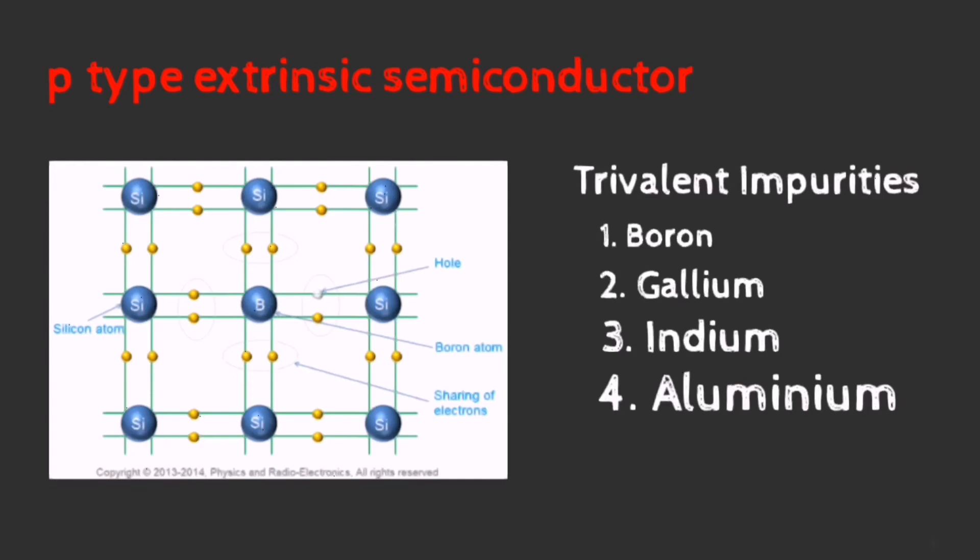When some external heat is provided, the bounded electron gains sufficient energy and tries to fill the vacant position. In this way, the movement of electrons generates conduction in P-type extrinsic semiconductors.